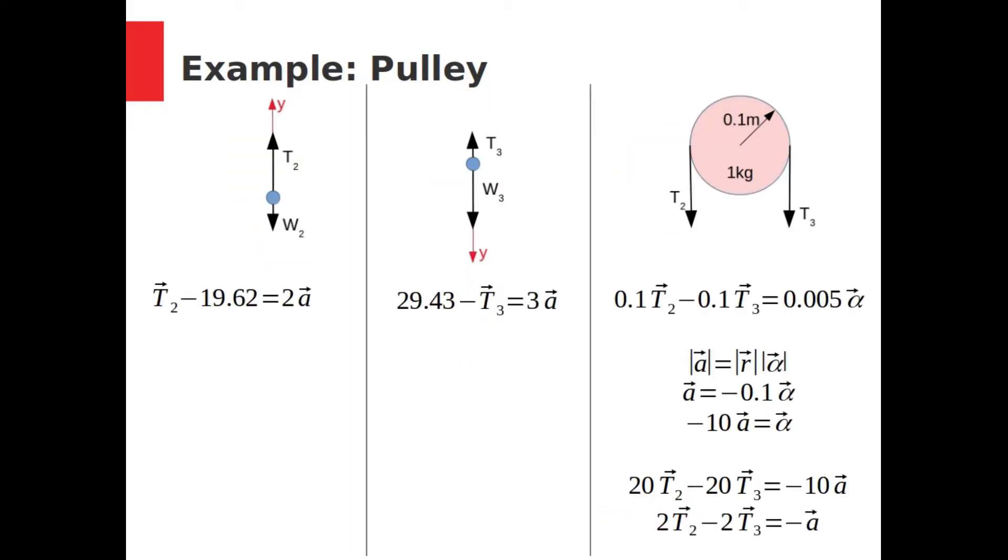Now, let us set up the force balances on the block and the torque balance on the wheel. For the wheel, there are two tensions, one from the 2 kg block that would turn it counterclockwise and one from the 3 kg block that would turn it clockwise. The torque from the left tension is 0.1 times T2, and the torque from the right tension is negative 0.1 times T3. We would need to use both torques in order to figure out the total torque, which is equal to I alpha.